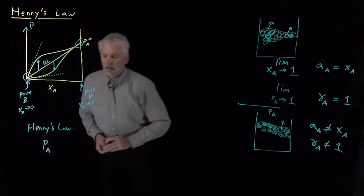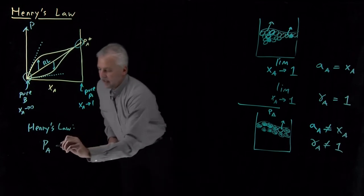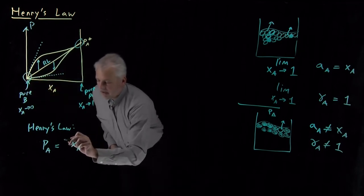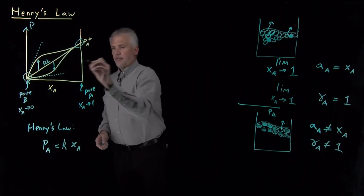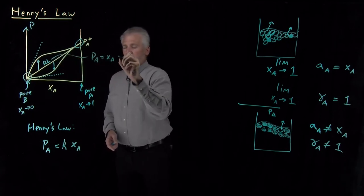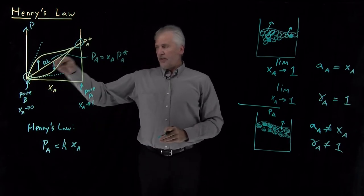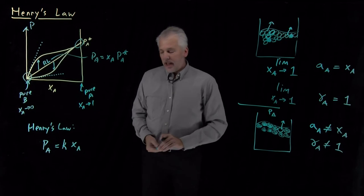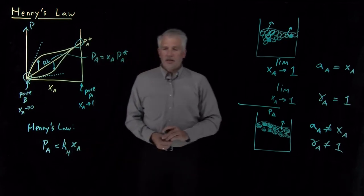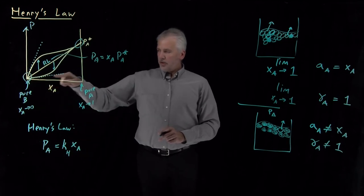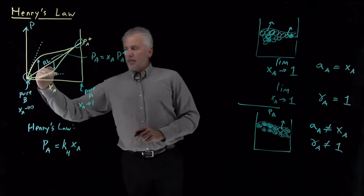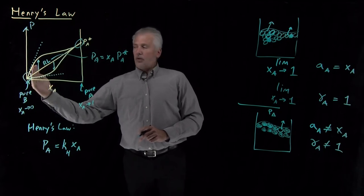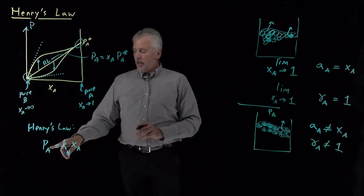Henry's law says the partial pressure of component A is a linear function of mole fraction at low concentrations — it looks like a straight line — but the coefficient is no longer the vapor pressure as in Raoult's law. Instead, the slope of this curve is some different constant, which we call k, or k-sub-H, the Henry's law constant. This is one version of Henry's law: a description of the straight line on the pressure-composition graph at low concentrations.